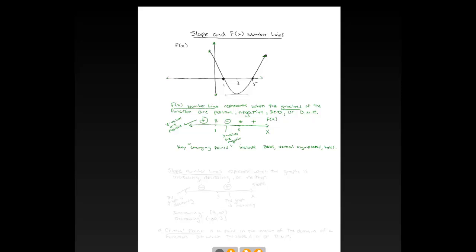Now we're going to do a slope number line for this graph. The slope number line extracts a different idea — it doesn't talk about when y-values are positive or negative; it refers to the slopes of the graph, meaning when the graph is increasing or decreasing as we go from left to right. So the slope number line represents where the graph is increasing or decreasing.